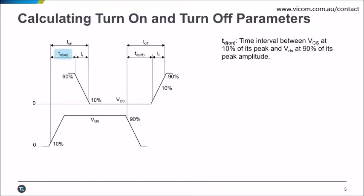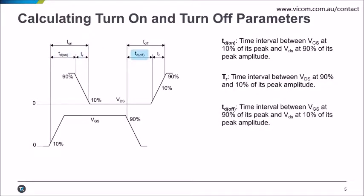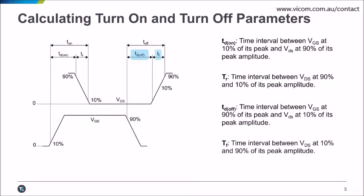The on time is a sum of the time interval between 10% of VGS and 90% of VDS. The off time is the sum of the interval between 90% of VGS and 10% of VDS and the time interval between 10% and 90% of VDS.